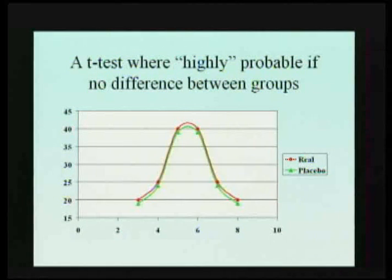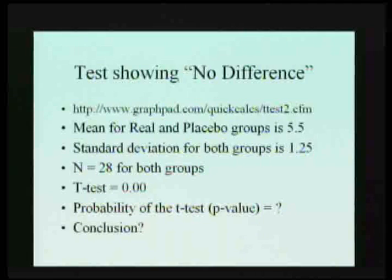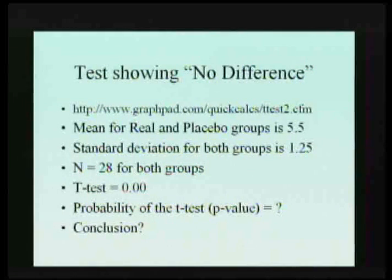This basically represents a situation where there's not much likelihood of a difference between two groups. In fact, there probably is no difference here because I purposely made these two groups have the same mean. If you employed the formula that I gave you about two slides ago, or if you went to this website at the top, you could actually calculate the t-test based on the means, the standard deviations, and the number of people in each group.